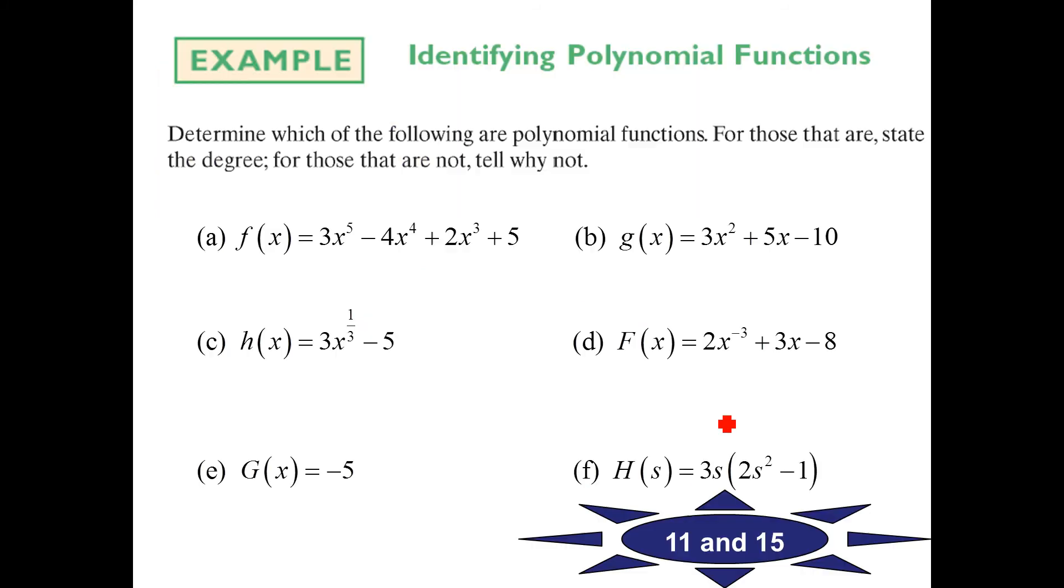All right, so let's take a look. Which of these are polynomial functions? This one is a yes, this one is a yes, because our powers are all whole numbers. No fractions, so c is out. No negatives, so d is out. E is a little tricky right here, but it's negative 5. You could write this as x to the 0, so this is absolutely a polynomial, as is f here. This is just not distributed. If you distributed, it would be 3 times 2 is 6, 6s cubed minus 3s, and so that is a polynomial.